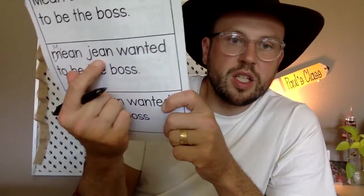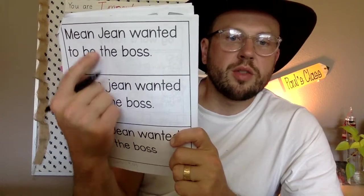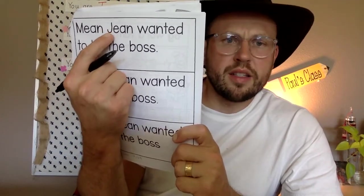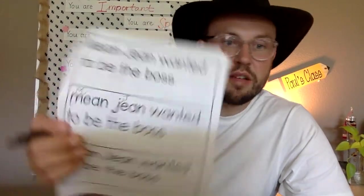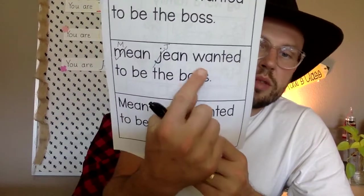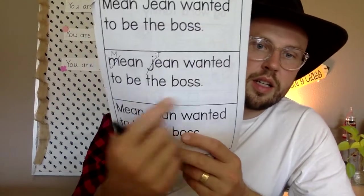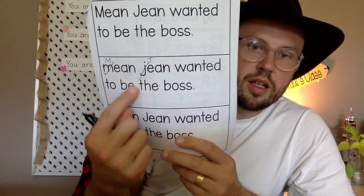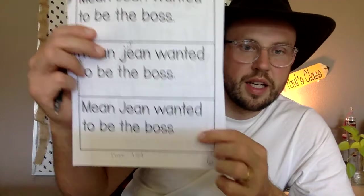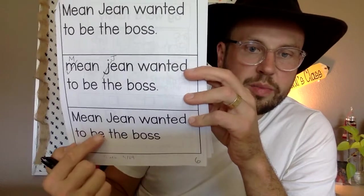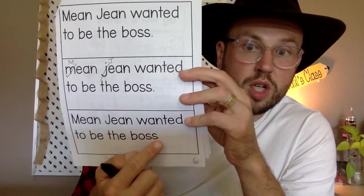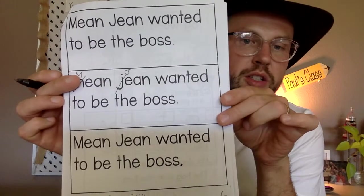Put a capital M. For 'Gene,' the J here is lowercase but the J in the correct example is uppercase — why? Because it's a name, and we always capitalize names, so this J also needs to be a capital J. Let's check the rest: 'wanted to be the boss' looks good. Down here on the last sentence, the capitalization looks good, 'wanted to be the boss' looks good, except it's missing a period at the end. There we go — check yours.